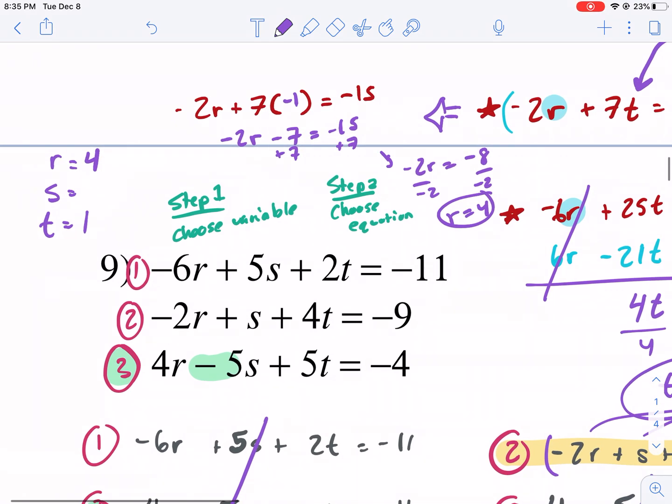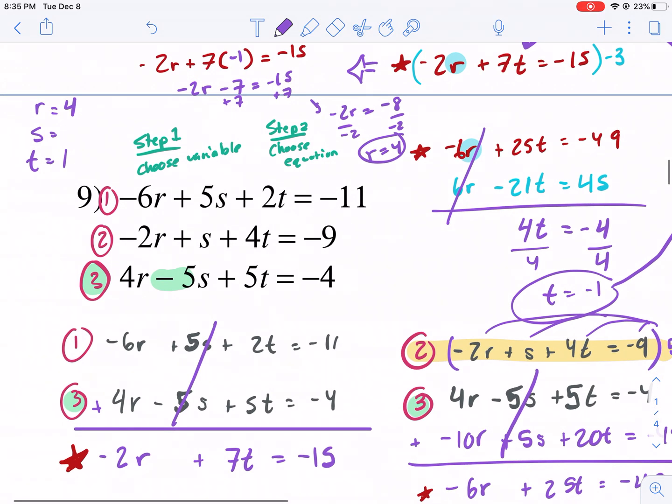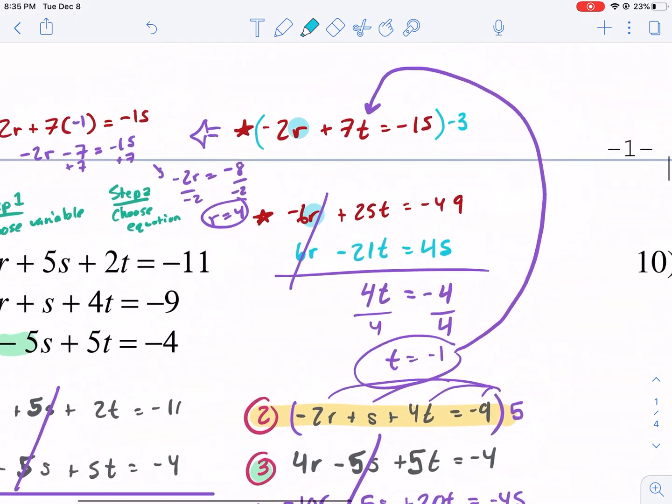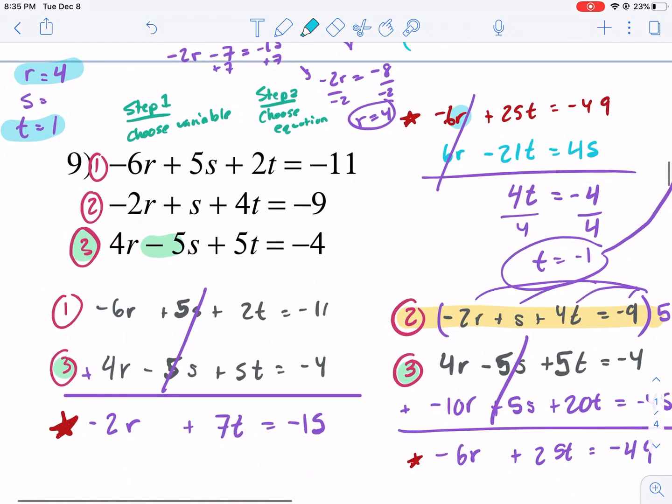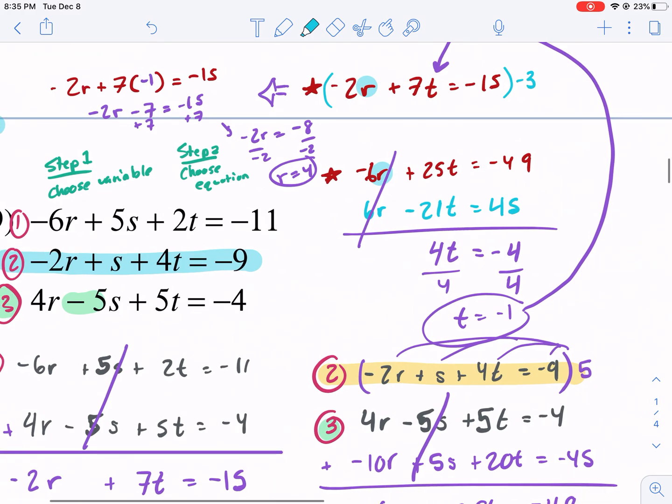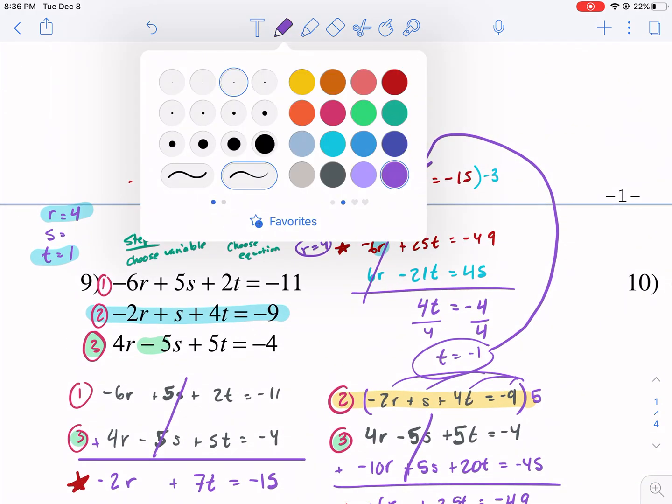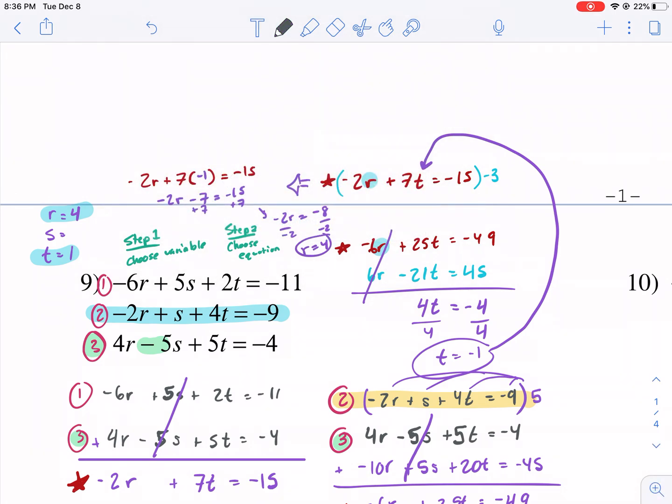Okay. So now I'm just down to S and that's the one I chose as my focus variable in the beginning. Now I can plug R equals four and T equals negative one into any equation. And I might as well choose this one right here because it's the simplest. It would be very easy to solve. The only problem is where do I put this? Okay. I'll just move this up here.